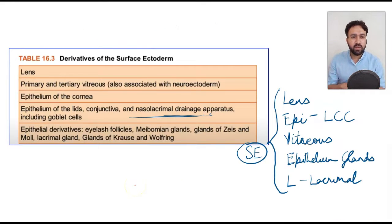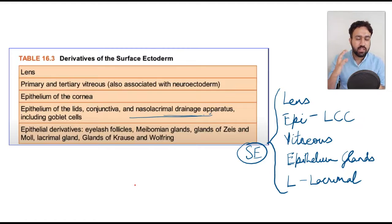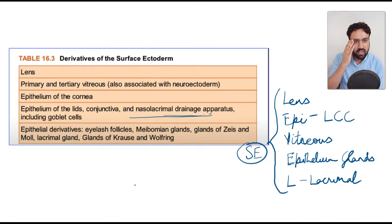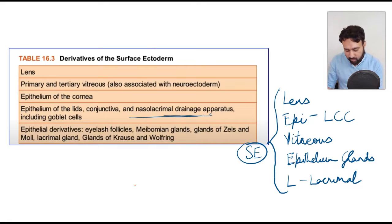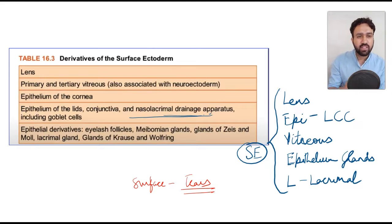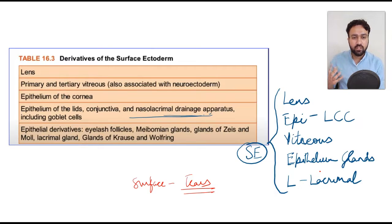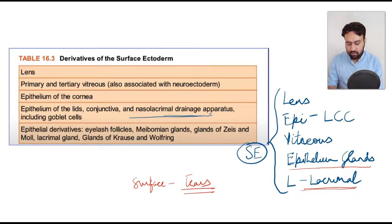The surface ectoderm is easy to understand and remember. Think of it as forming the external surface of the eye. Externally, you've got the epithelium of the lids, then the epithelium of the conjunctiva, and the epithelium of the cornea. Also remember that on the surface you've got tears, so the parts of the eye which have a function in maintaining the tear film will also be derivatives of the surface ectoderm — the epithelium of the glands and the lacrimal apparatus.